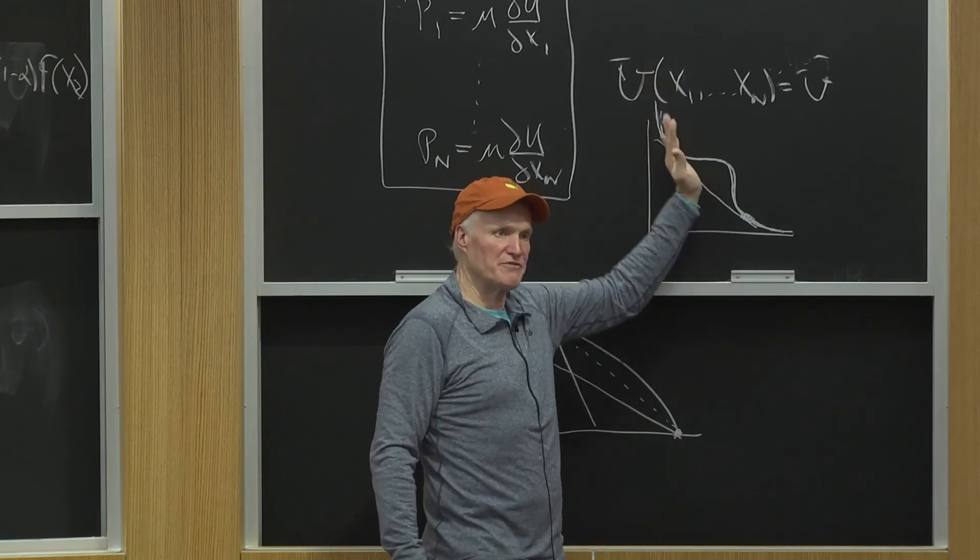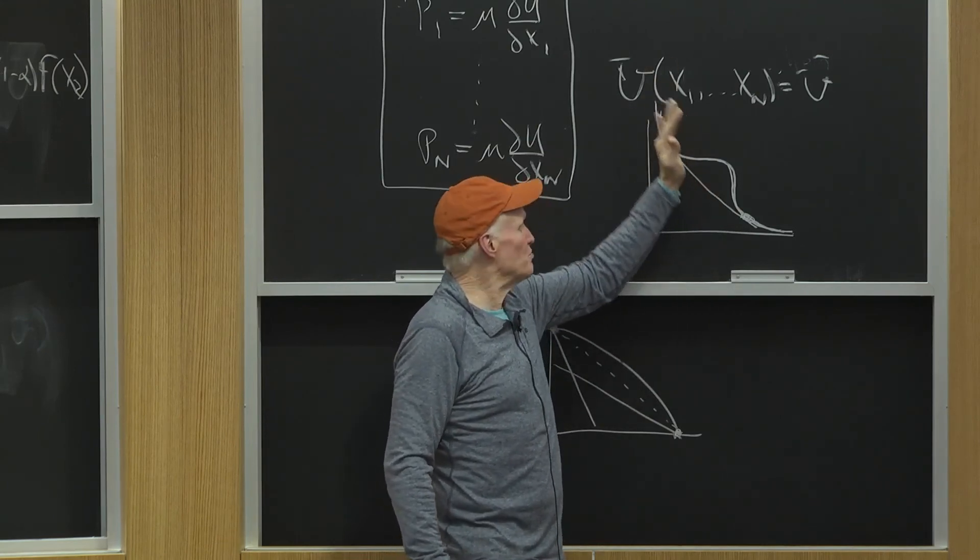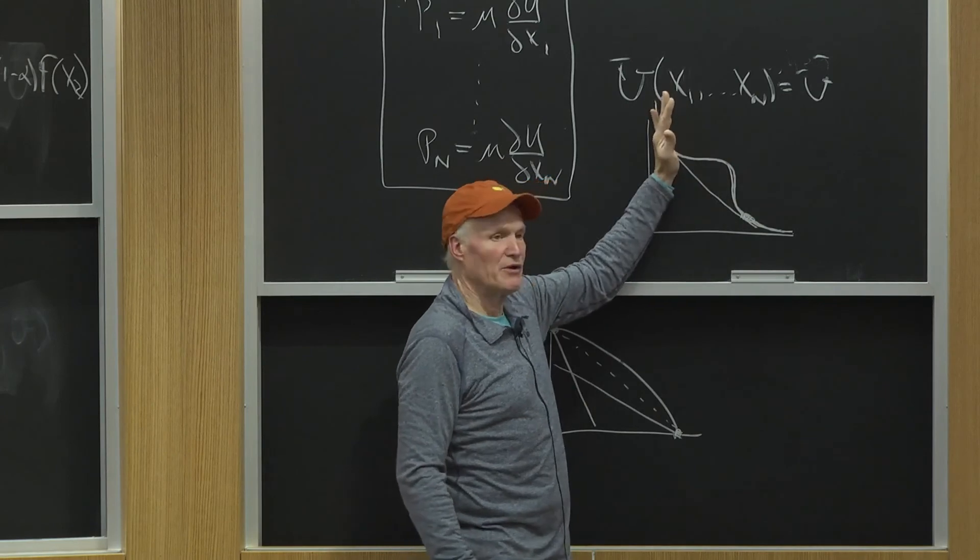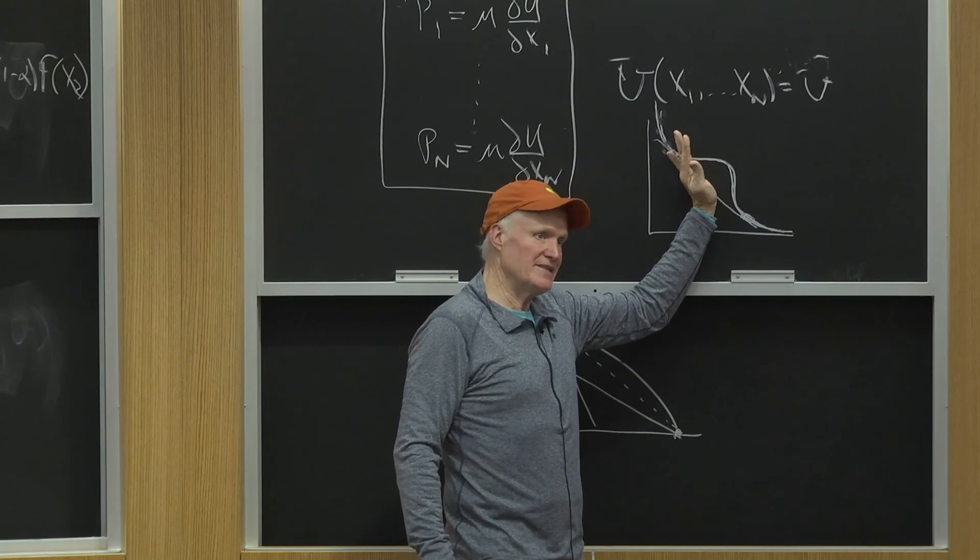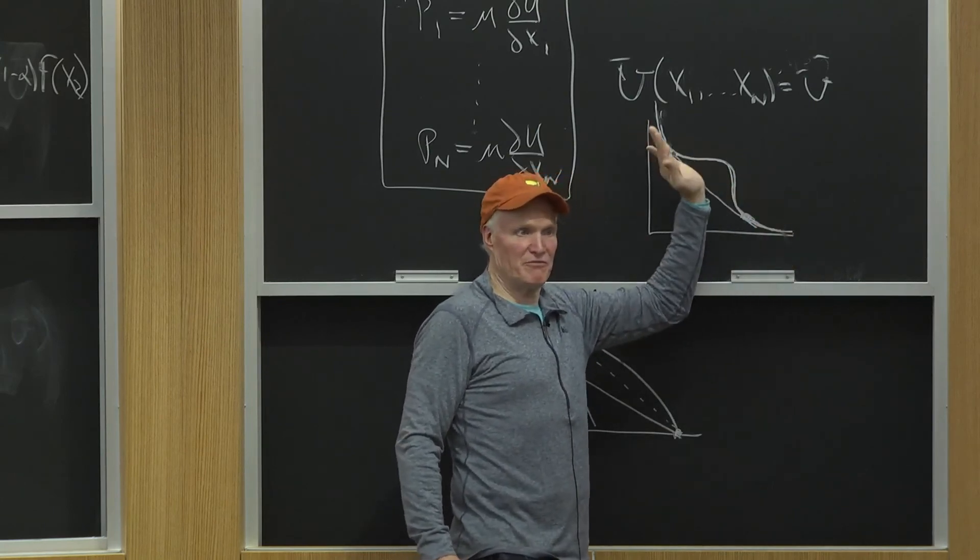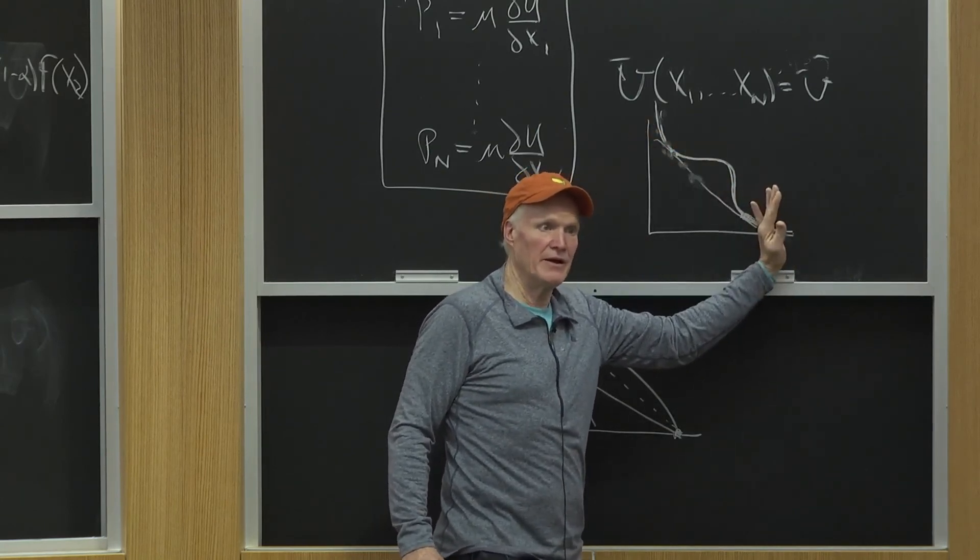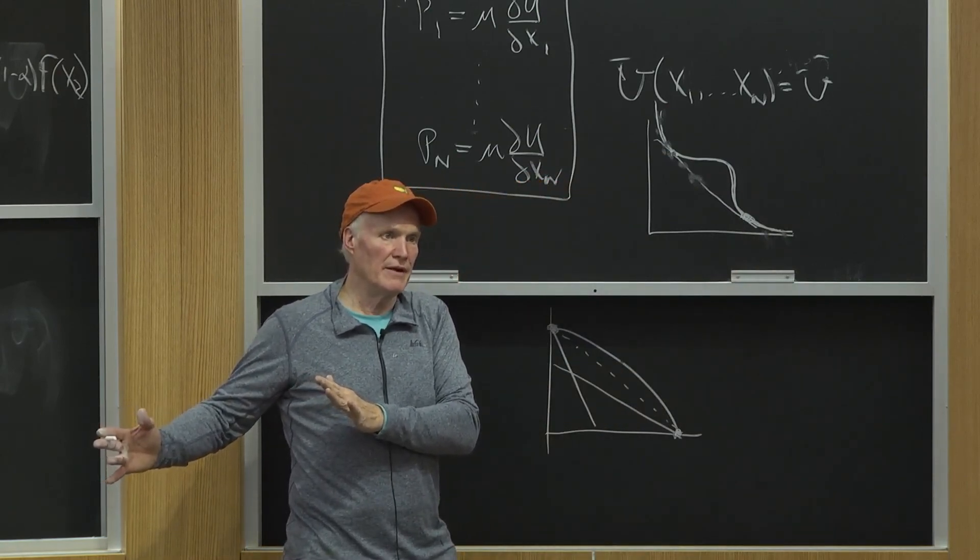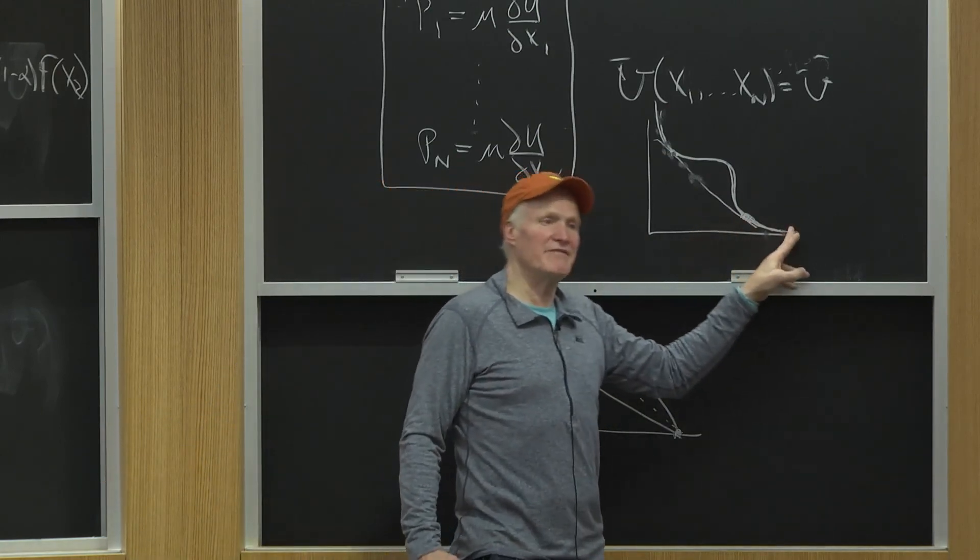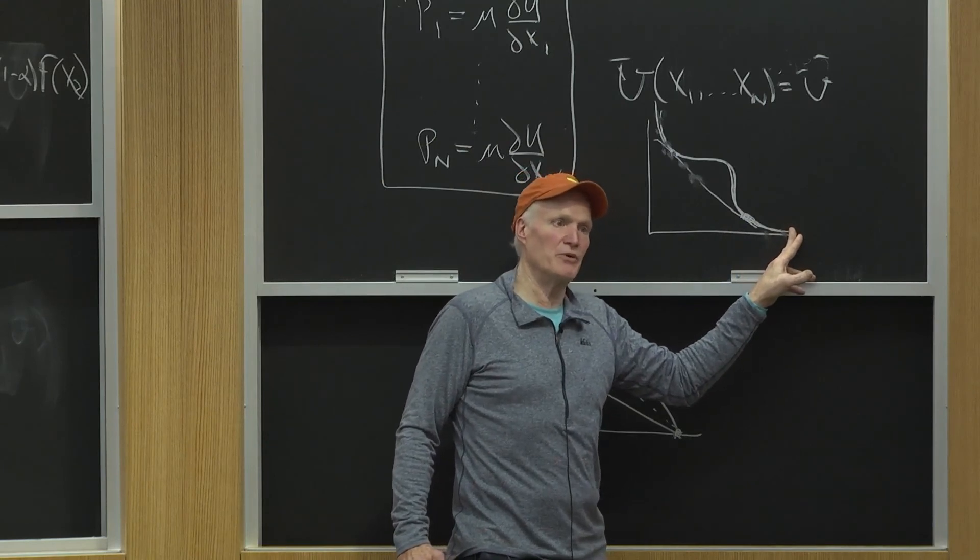As prices of good one go down relative to good two, he's going to buy more and more good one. And then at some point, he's going to make this quantum leap and jump from here to here and dramatically shift his consumption bundle. Right? And then he's going to start behaving again like a nice smooth guy would over here.